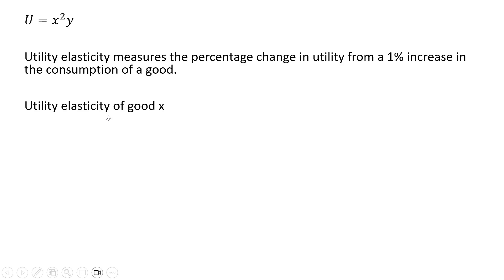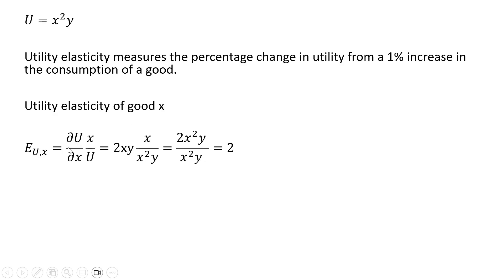We're going to first calculate the utility elasticity of good x. We're going to take the partial derivative of the utility function with respect to x, then multiply it by x and divide it by the utility function. The partial derivative of x squared times y with respect to x is 2xy. Then we multiply that by x and divide it by the utility function, where u is x squared times y.